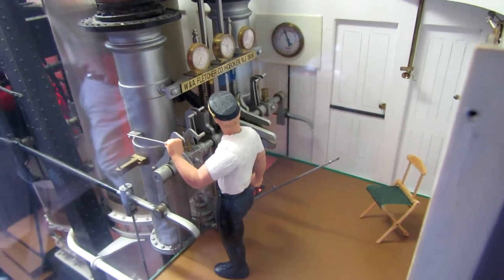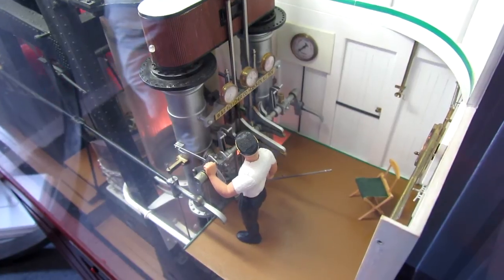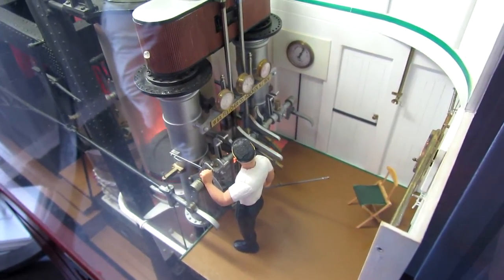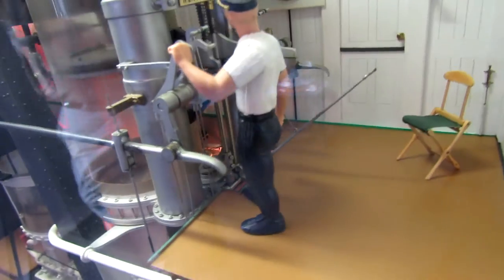Once the engine was set in motion, the engineer would drop the hooks, which meant he would lower the eccentric arms into place, operating the valves automatically.